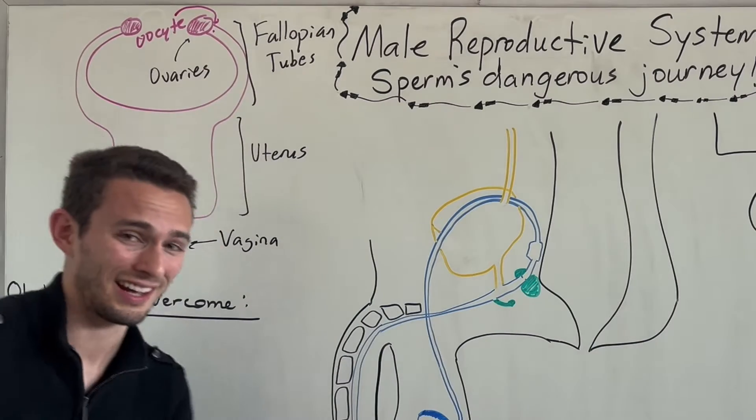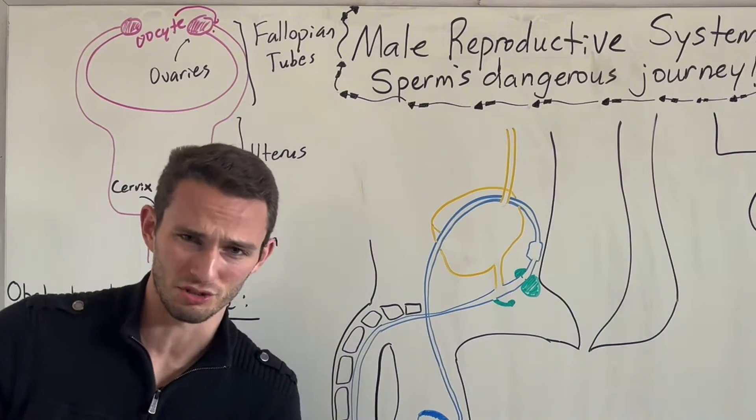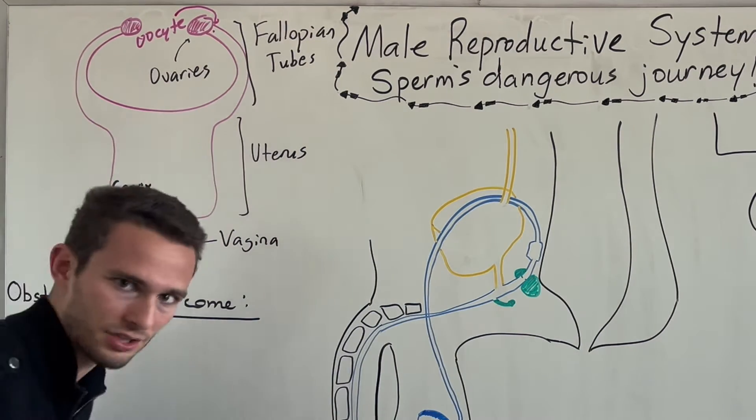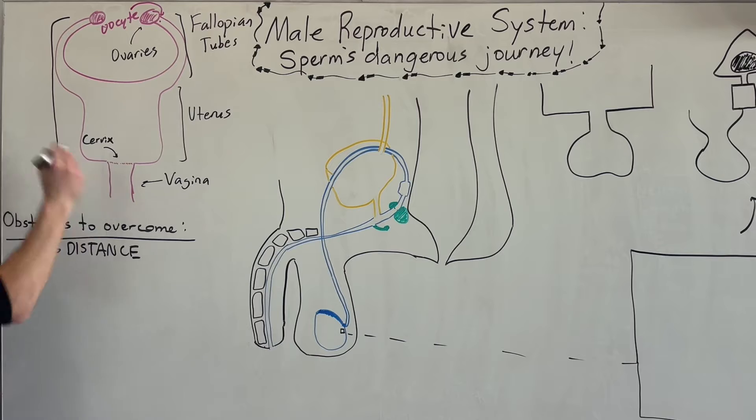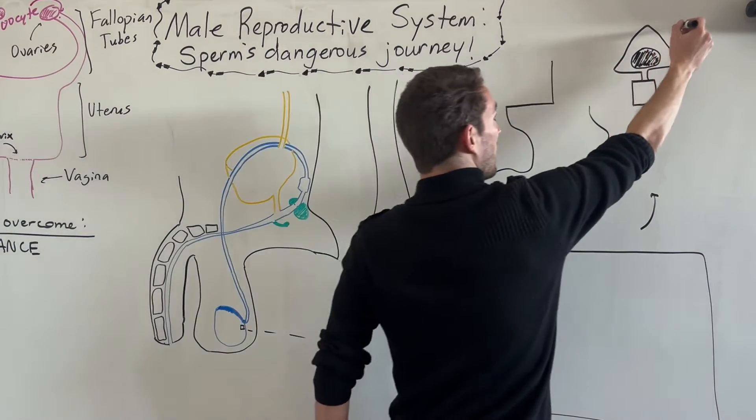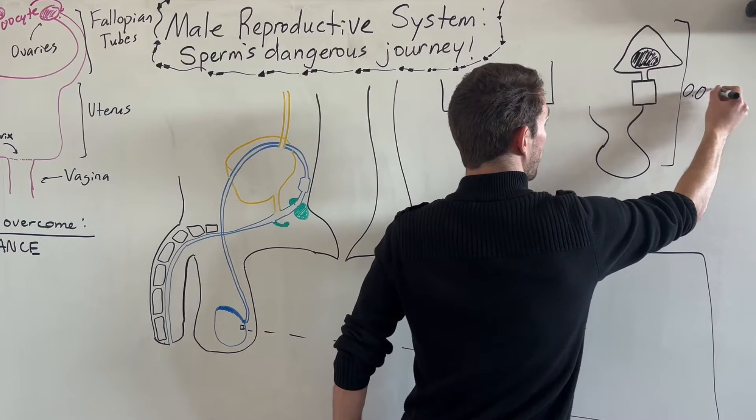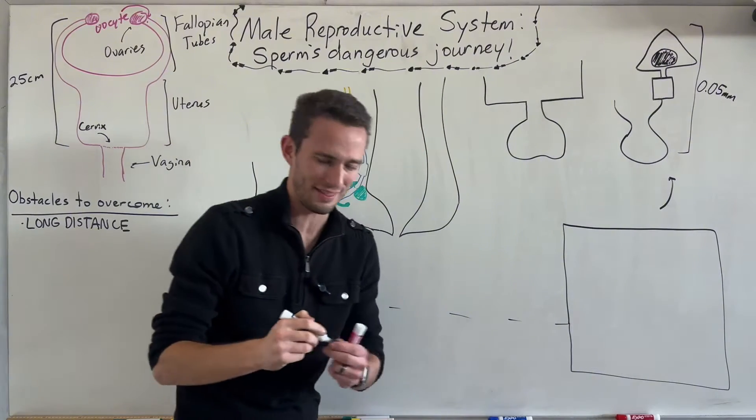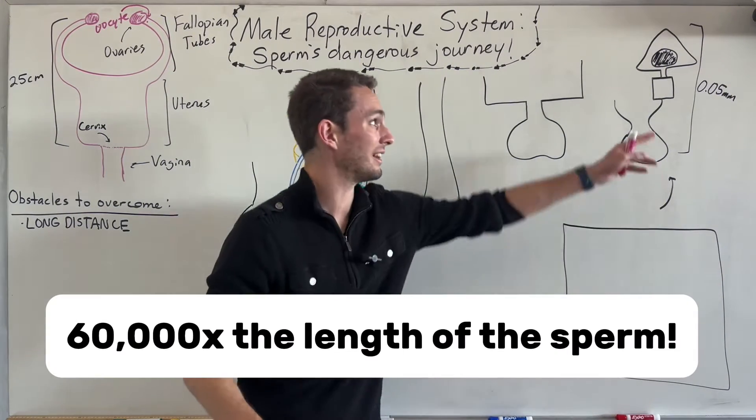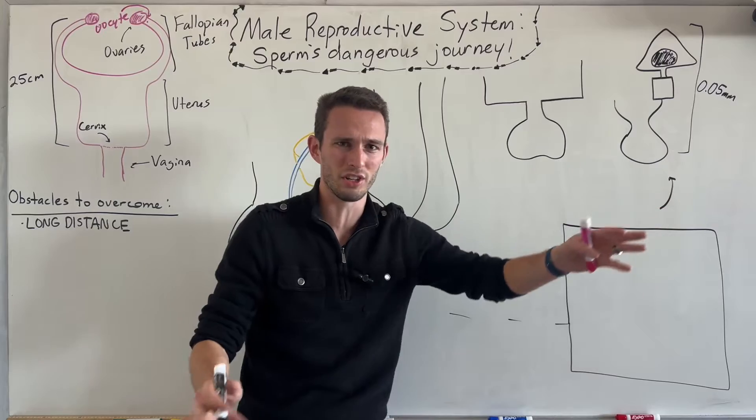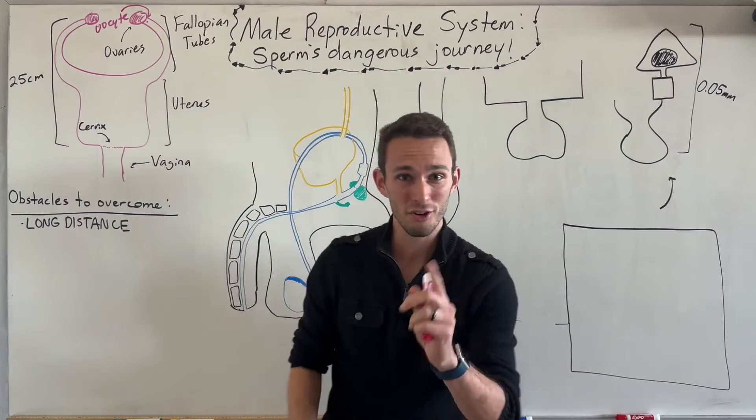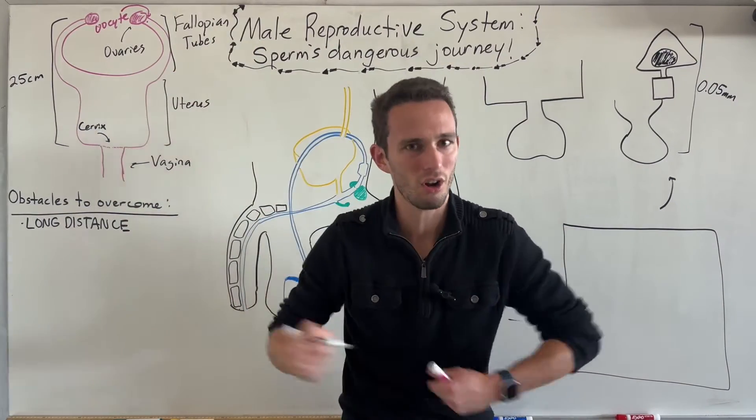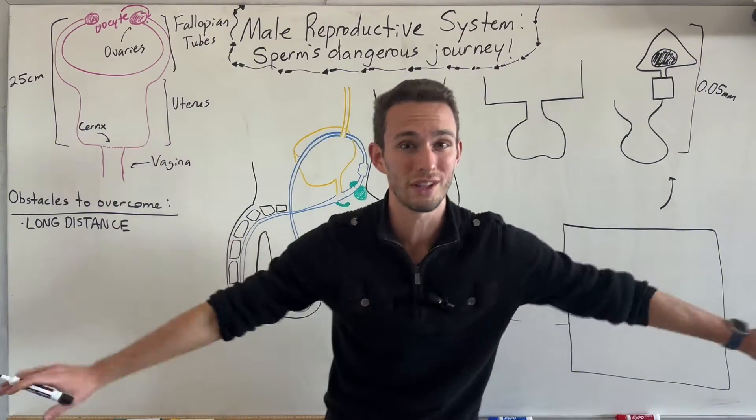Along the way, it's going to encounter a vast variety of dangerous obstacles. The first of which being a long, long distance. If you were to actually measure the tract of the female reproductive system, it's going to be about 25 centimeters long. But the sperm's length is only about 0.05 millimeters long. That is about 60,000 times the length of the sperm cell. That's the equivalent of you and I literally moving approximately 60 miles.